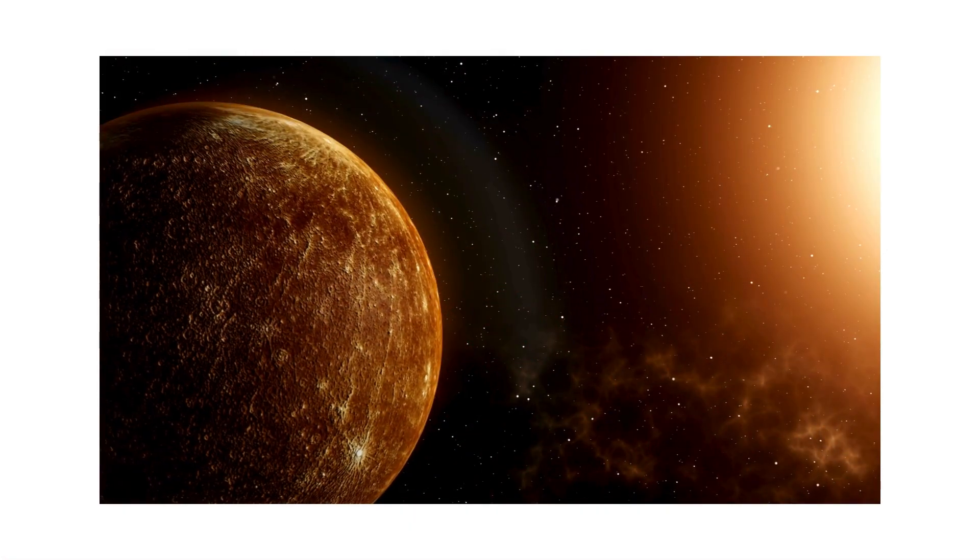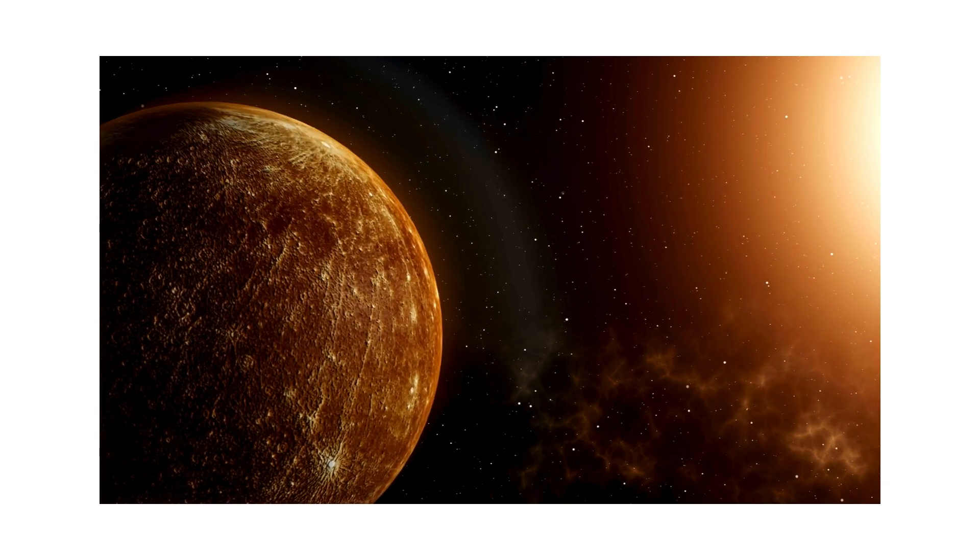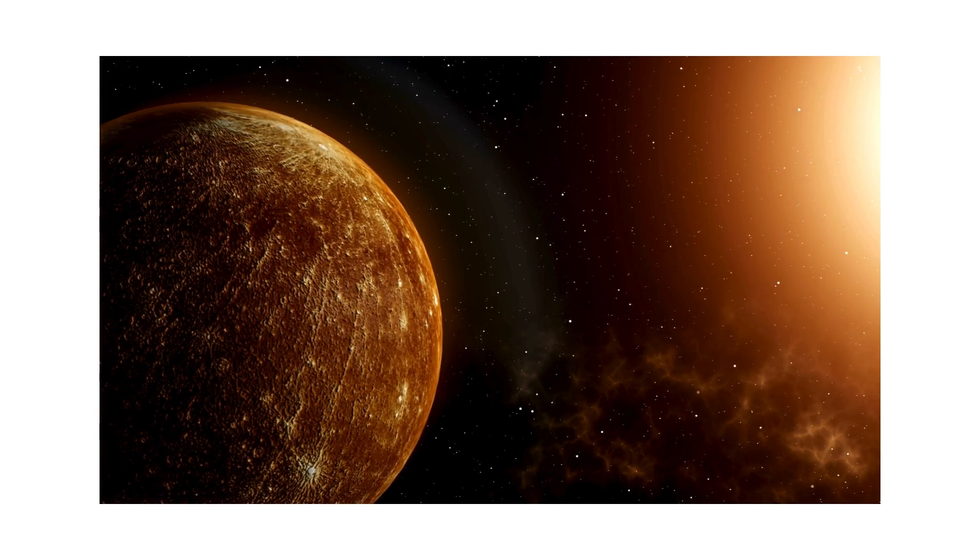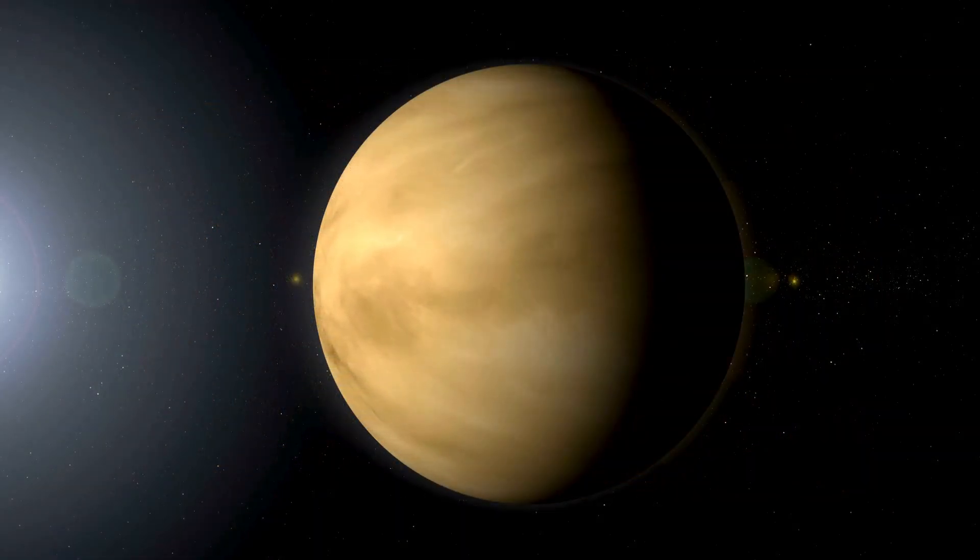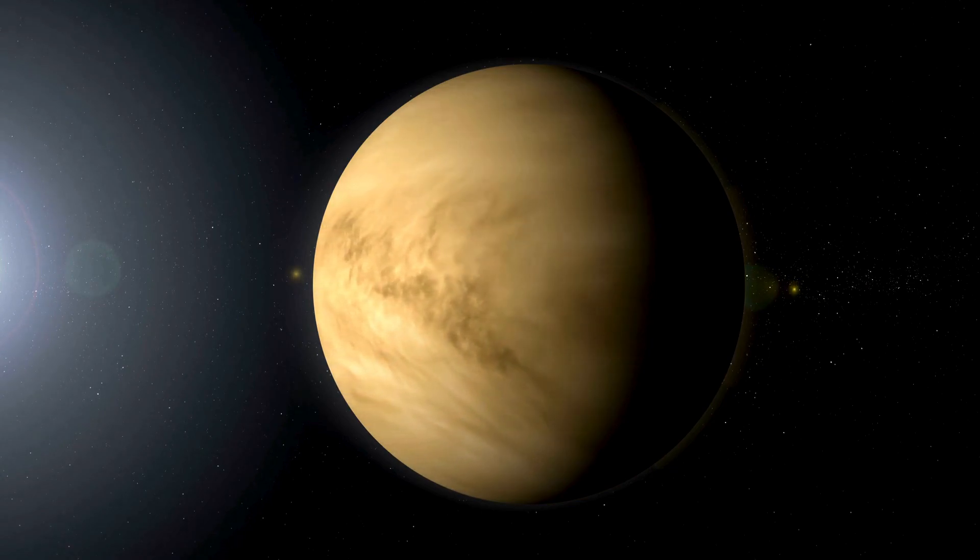First is Mercury, small and bright, closest to the sun, hot with light. Then comes Venus, glowing strong, with clouds so thick, all day long.